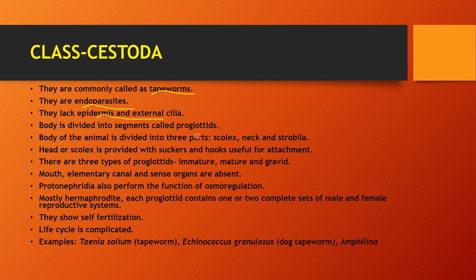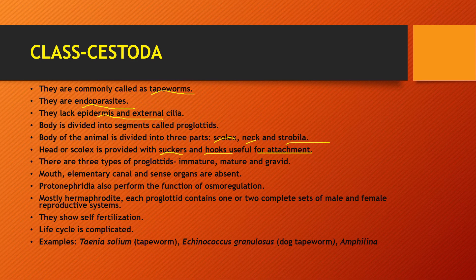The body is segmented by proglottids — each proglottid contains reproductive organs. The body is divided into three parts: the scolex (head), neck, and strobila. The scolex is provided with suckers and hooks, which are used for attachment to the host's body, allowing them to absorb nourishment from the host.